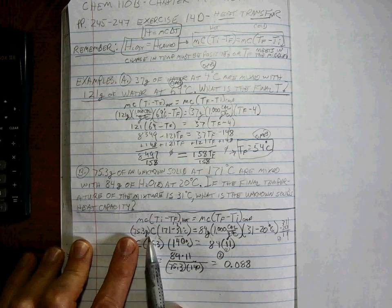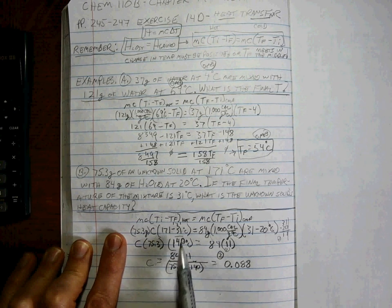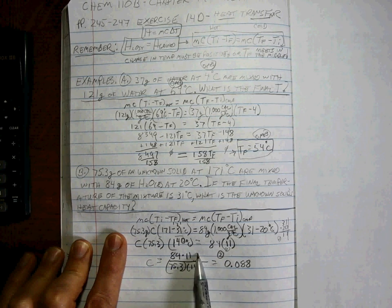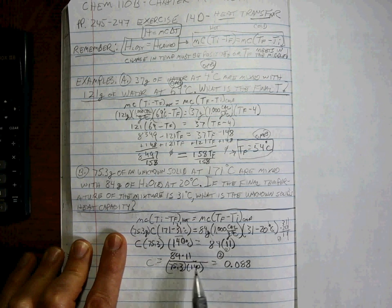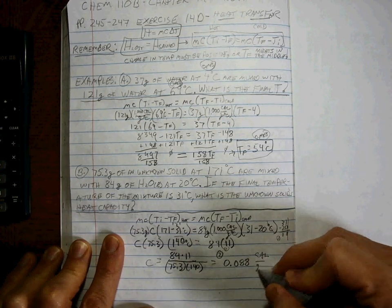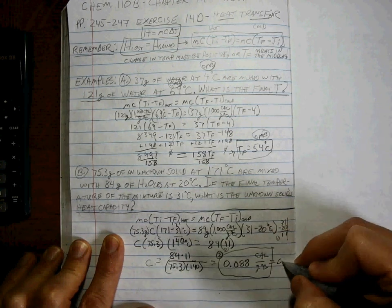And then over here, the grams comes over and the degree C comes over. So grams, I'm sorry, calories per gram per degree C, which is what it has to be whenever we're doing the heat capacity. So that's what C is equal to.